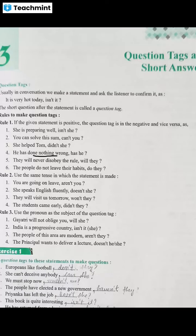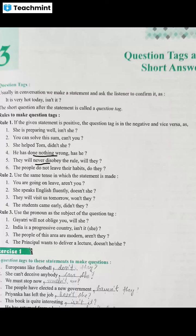The fifth example: they will never disobey the rule. The word 'never' is negative — just like 'not' and 'nothing' are negative. This whole thing is negative. So when these negative words appear, the sentence is treated as negative.